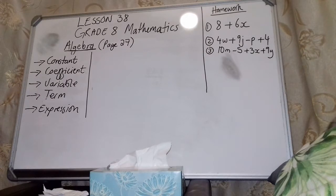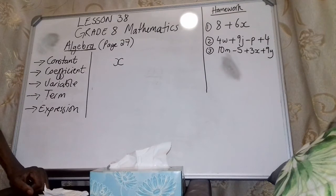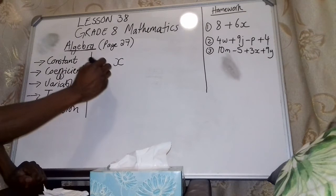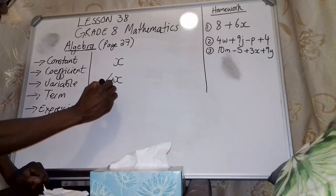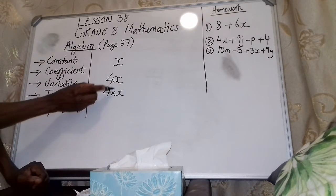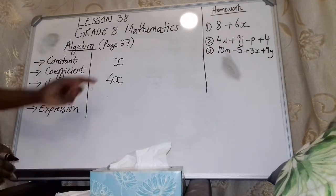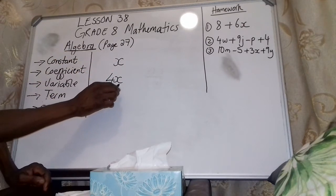There's one thing I want you to understand from the beginning. If I have X — we like using X and Y in mathematics — that is an expression, that is a term, that is a variable. But the moment I write 4X, I am multiplying 4 with X. We don't write it as 4 times X; instead we just write 4X, meaning 4 times X. That is still a term and an expression — an expression with one term.